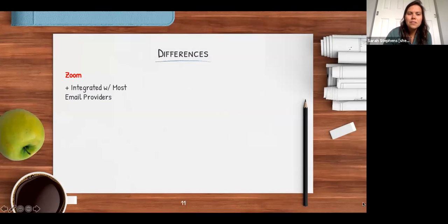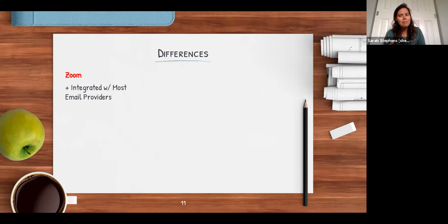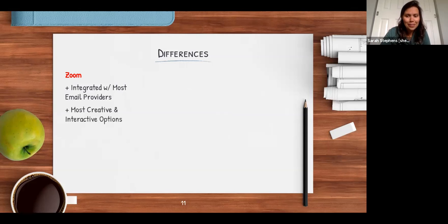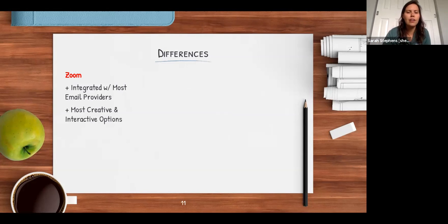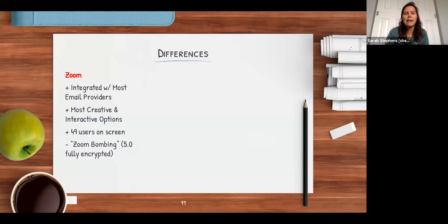Zoom integrates with pretty much any type of email provider — Google, Yahoo, even AOL. I think it's the most creative and interactive platform — it has lots of features that almost feel in-person. The whiteboard feature is really cool with lots of real-time interaction. You can have up to 49 users on screen, which is the most of any of these. The drawback is 'Zoom bombing' — it's not as secure, but they're releasing a 5.0 version that should address that.